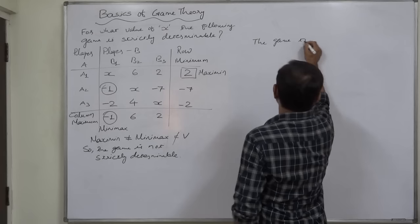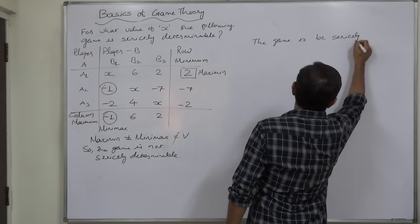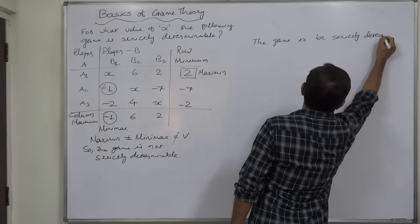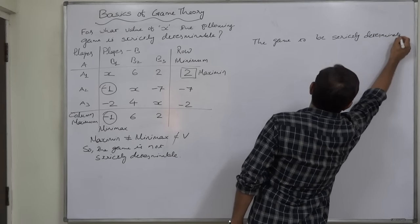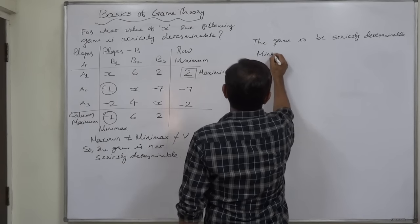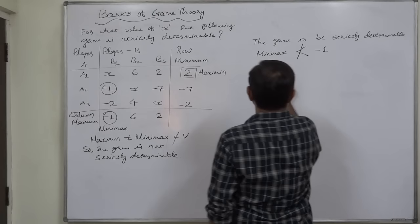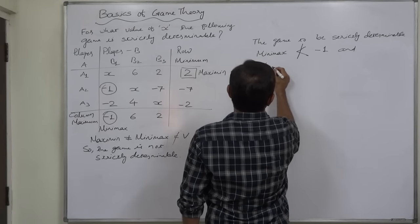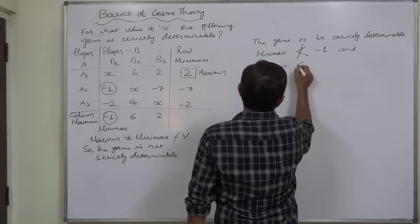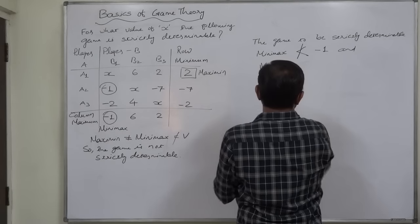The game, to be strictly determinable, minimax should not be less than minus 1 and at the same time, maximin should not be greater than 2, the present values.